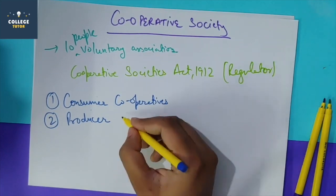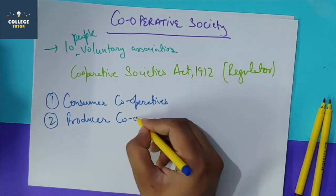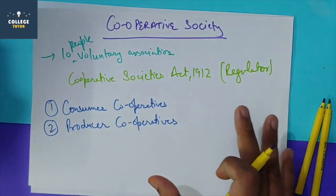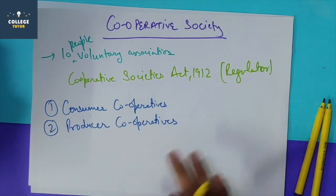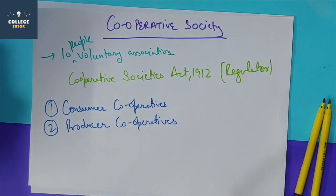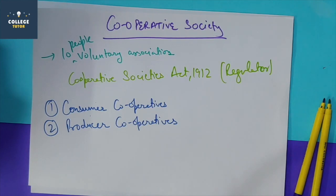Another type is the producer cooperative. In producer cooperatives, small producers who cannot compete with big brands are supported. These societies are formed for the welfare of small producers such as handloom owners, weavers, and similar artisans who form small societies together.